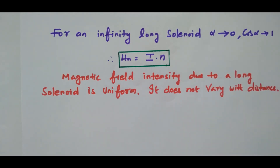In this video we discussed the magnetic field intensity at the centre of the solenoid — its derivation and the special case of an infinite long solenoid, where H = I·n. Thank you.